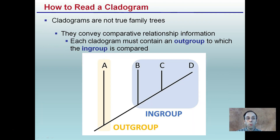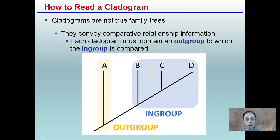The terms in-groups and out-groups are important — these cladograms are not true family trees, so it's important to make that distinction. Each cladogram contains an out-group to which the in-group is compared. The in-group consists of closely related organisms, and the out-group is separated out and used for comparison. They may share some similar properties because they share a common ancestor, but the in-group members are more closely related to each other than to the out-group.